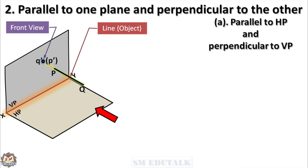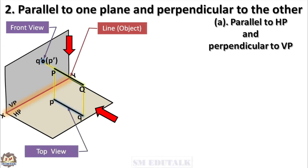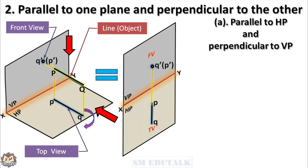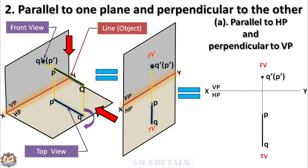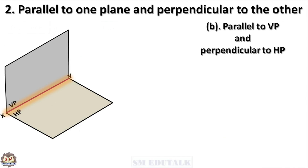Q' represents the visible endpoint and (P') represents the invisible endpoint. When you look at the line from the top, the line PQ looks like a line, so the top view is projected to the HP as line pq. After rotating the HP 90 degrees, both views are on the same plane. While drawing the views, top view pq should be drawn first because its length equals the known length of the given line PQ. Then project the top view above the XY line to get the front view.